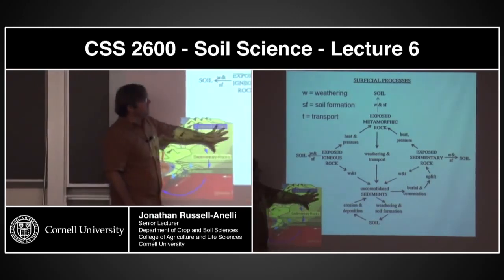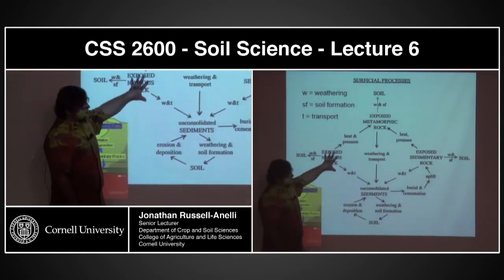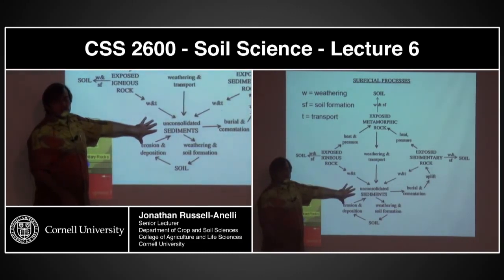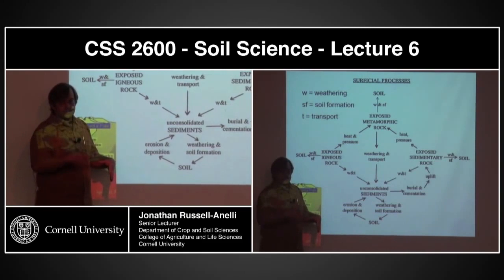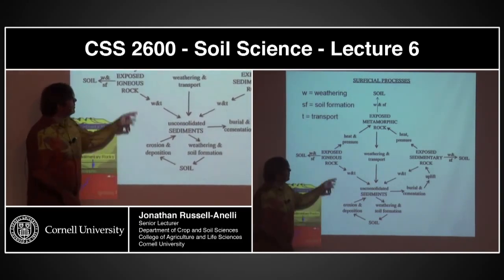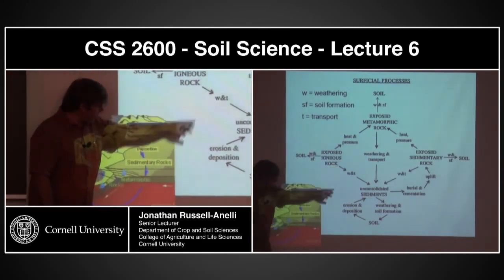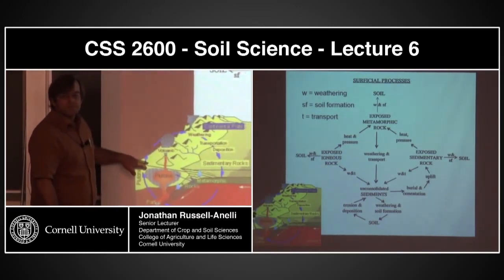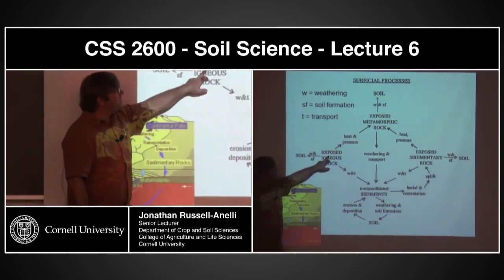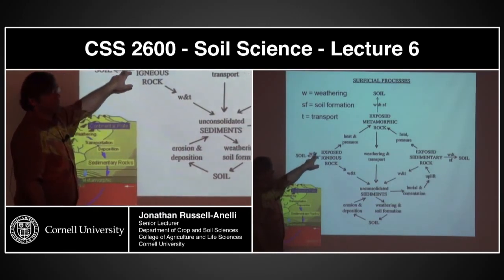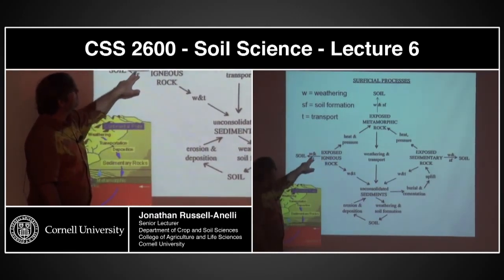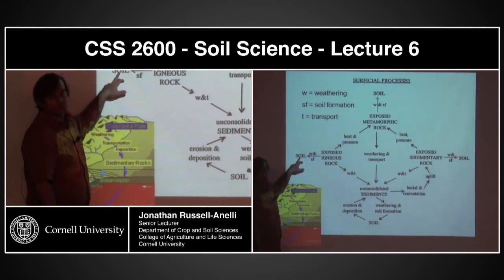Here's a schematic of how these materials move, the portions that are turned into soil, and basically the flowchart of it. Let's start with exposed igneous rock — it's come up and is now exposed. At this point, I could have weathering, and if I have weathering and surface formation, I could produce soils.